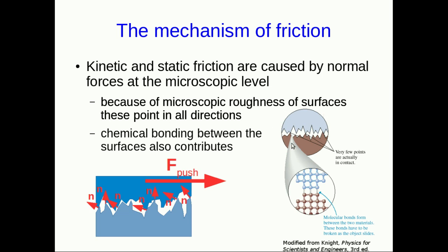Chemical bonding also plays a role. Wherever the surfaces do touch, molecular bonds will form. And one of the reasons static friction tends to be larger, or can be larger than kinetic friction, is that these molecular bonds form, and then you have to break them before the two surfaces will move.